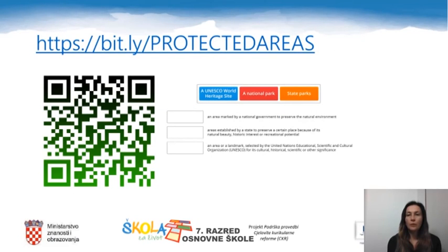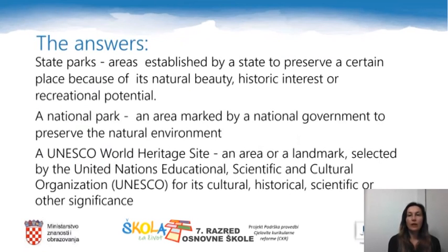Copy the following link into your web browser or scan the QR code to match the following definitions to the appropriate descriptions. Here are the answers: State parks are areas established by a state to preserve a certain place because of its natural beauty, historic interest, or recreational potential. A national park is an area marked by a national government to preserve the natural environment. A UNESCO World Heritage Site is an area or a landmark selected by the United Nations Educational, Scientific and Cultural Organization for its cultural, historical, scientific, or other significance.